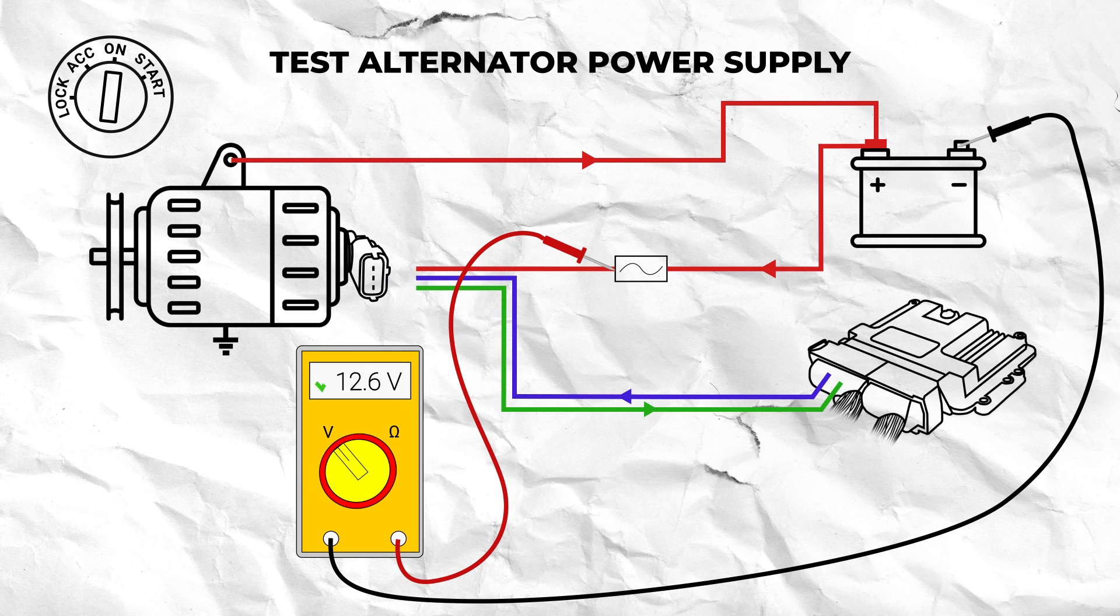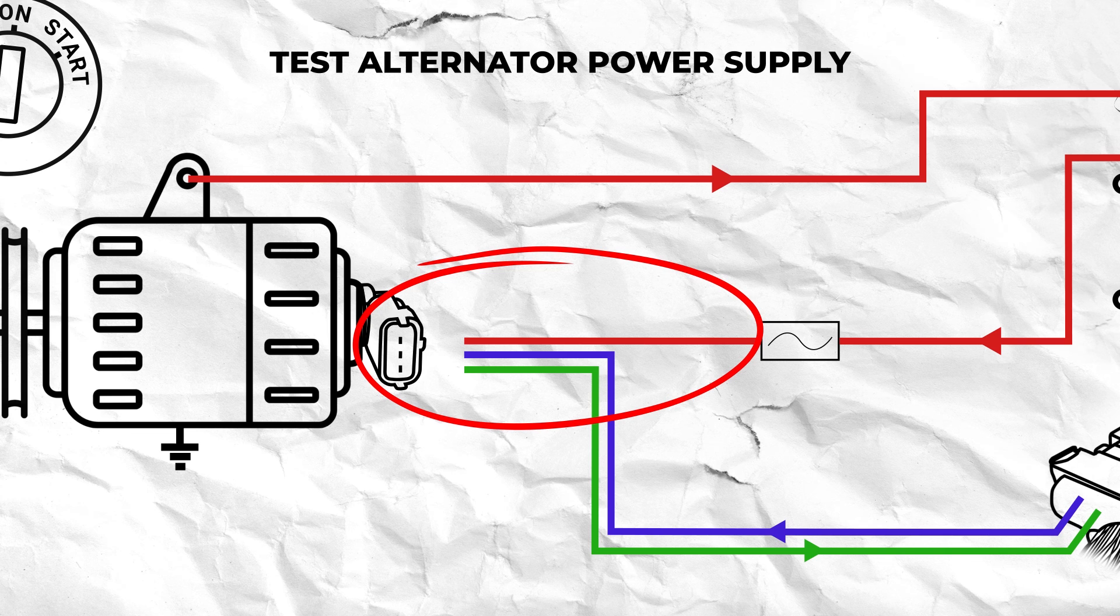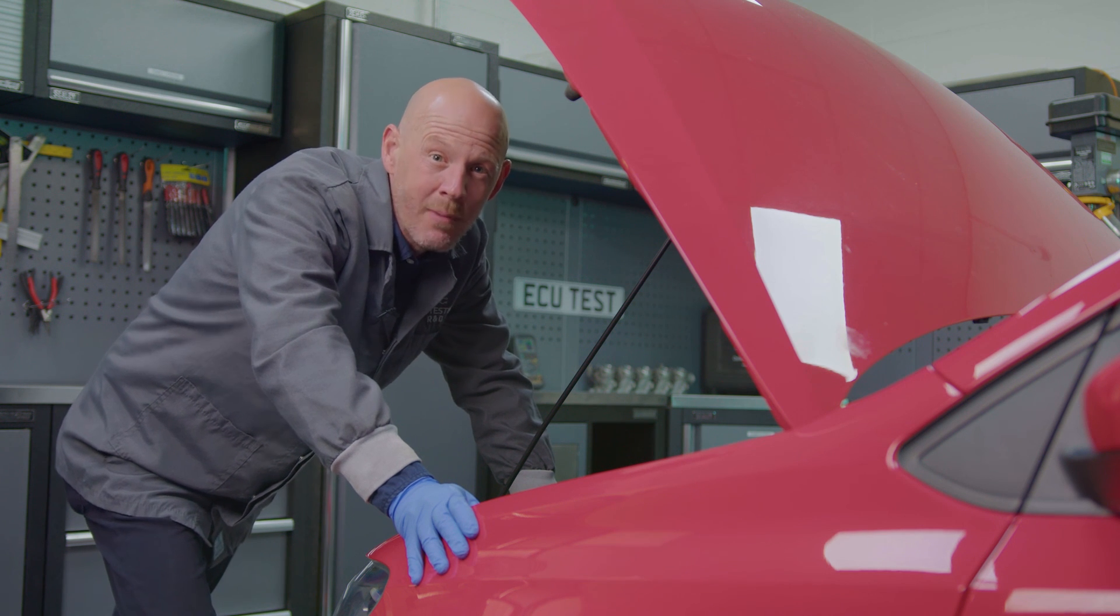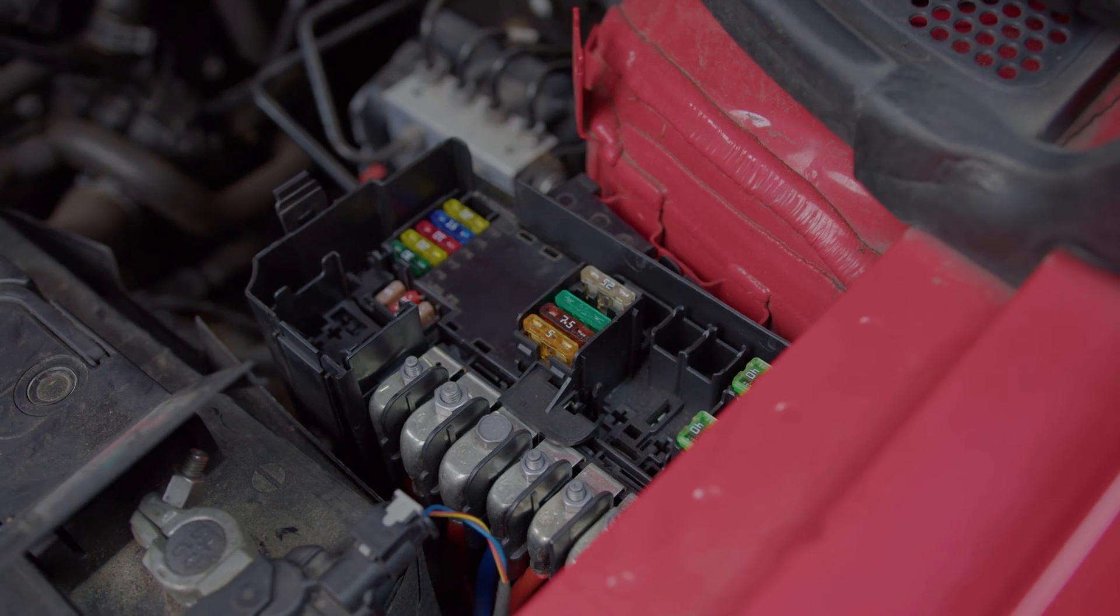However if you have battery voltage at the fuse then the fault will lie with the wiring to the alternator or the connector. Check out our video on how to repair wiring and connector faults by clicking here. And don't forget to subscribe so you don't miss out on any other related content.